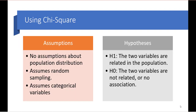When using chi-square, we do have some assumptions. We don't have any assumptions about the population distribution; however, we do assume random sampling and categorical variables. Our research hypothesis is that the two variables are related or associated in the population. Our null hypothesis, however, is that the two variables are not related or have no association.